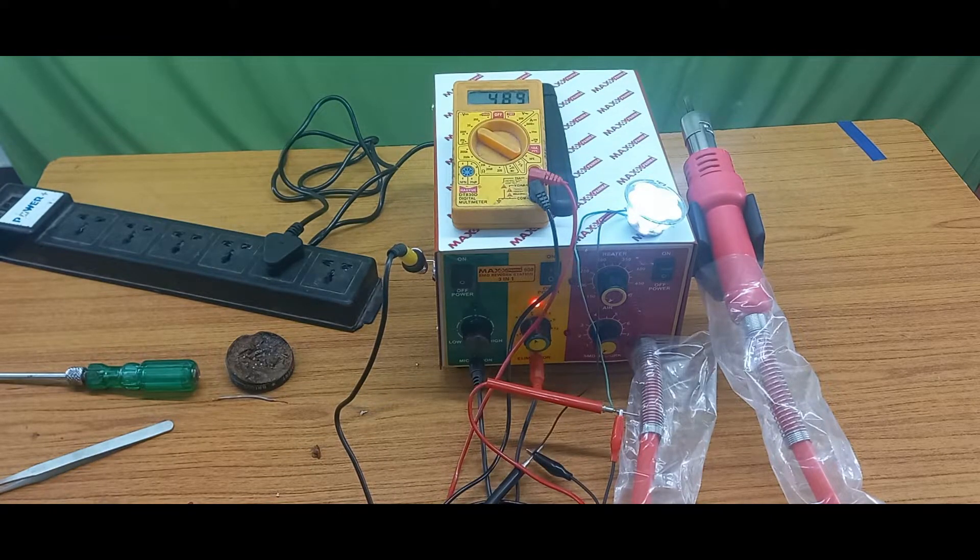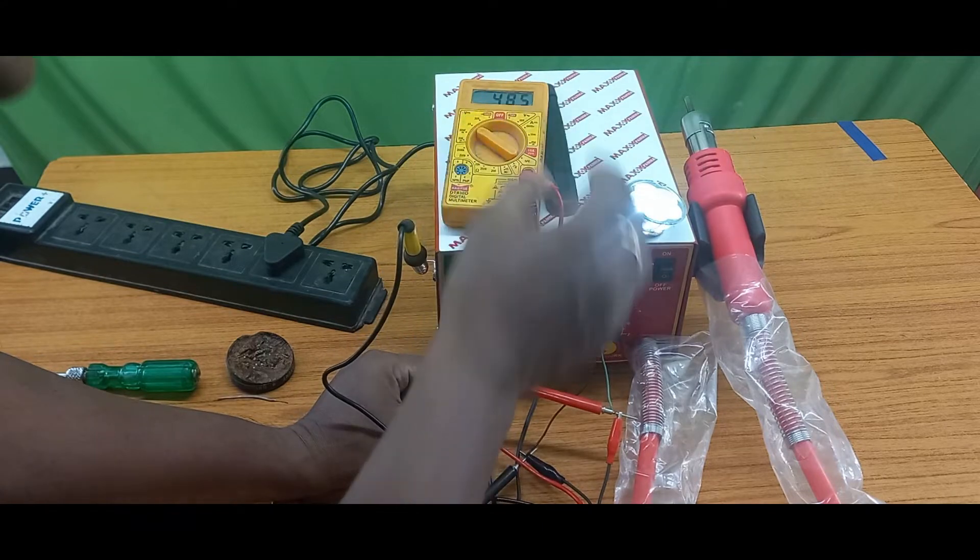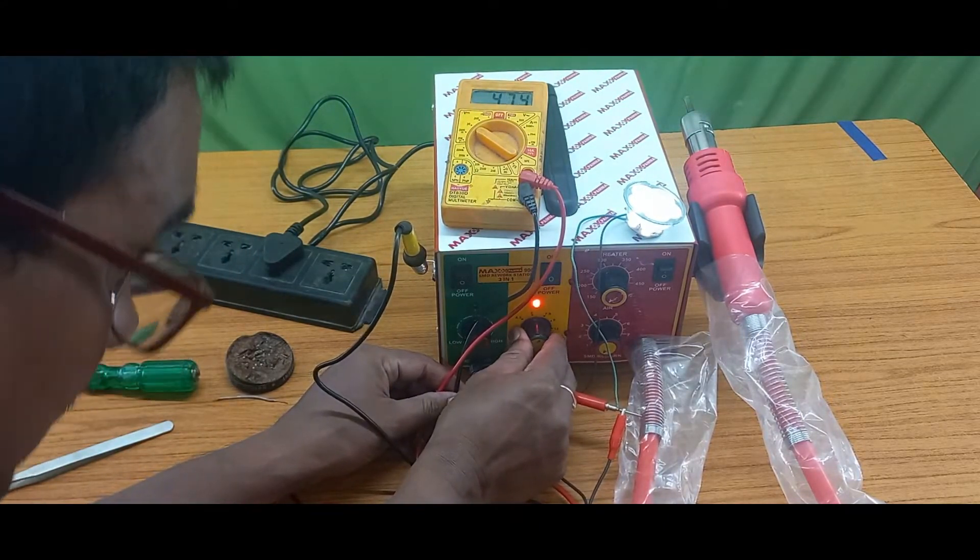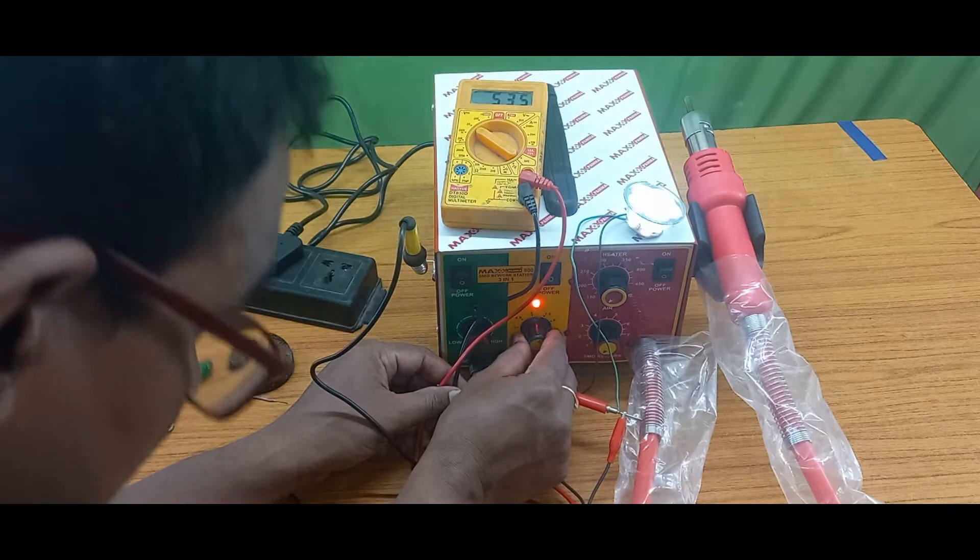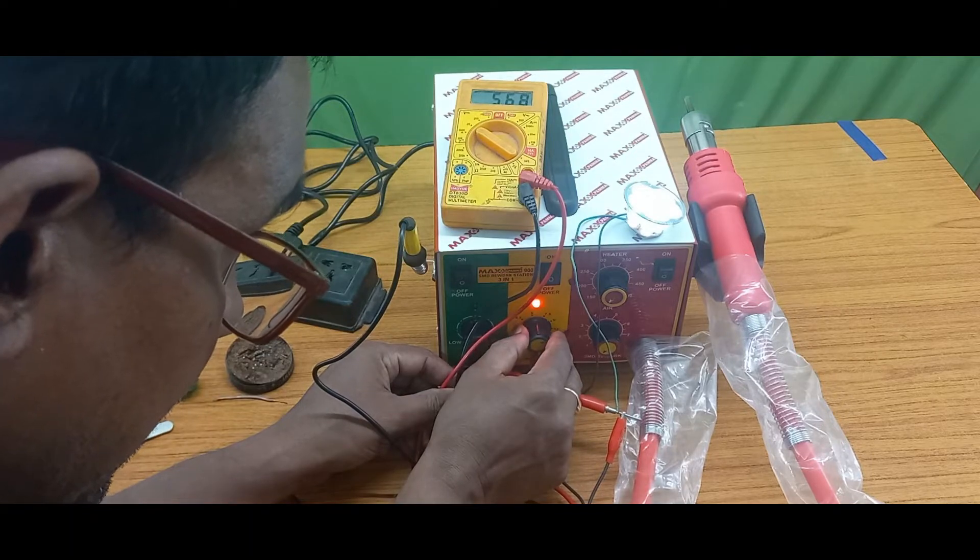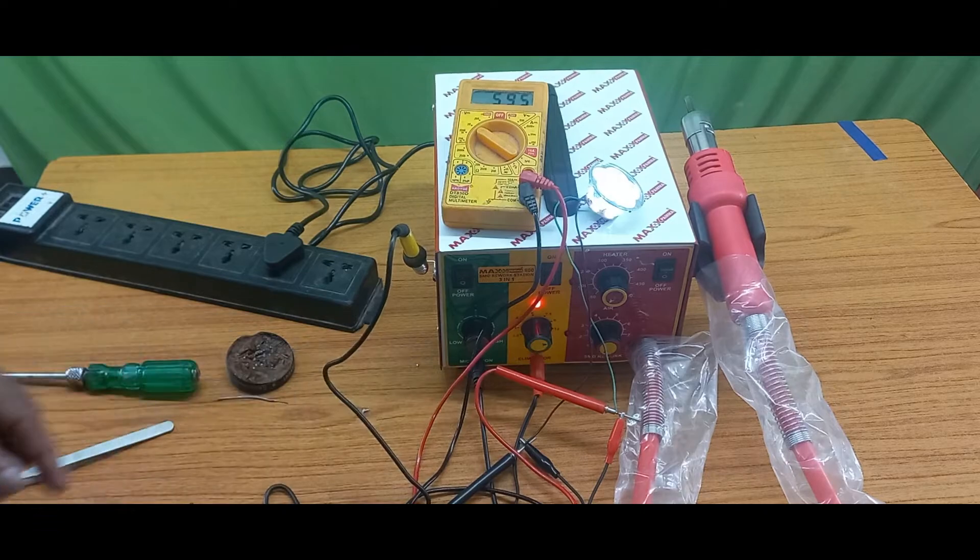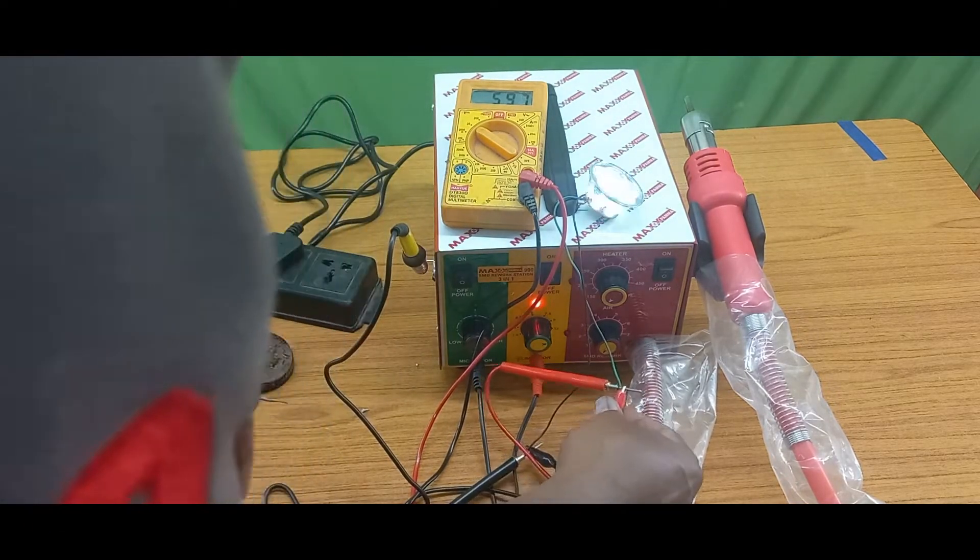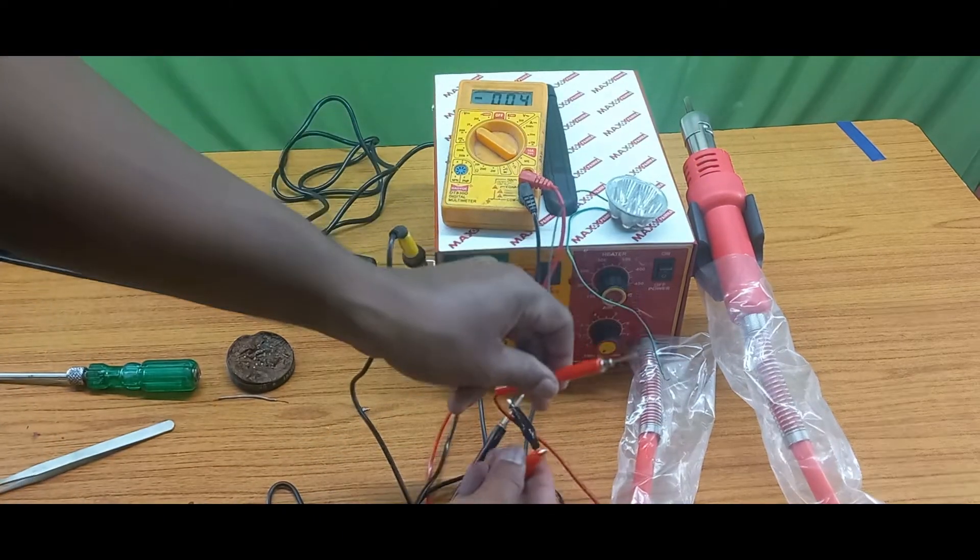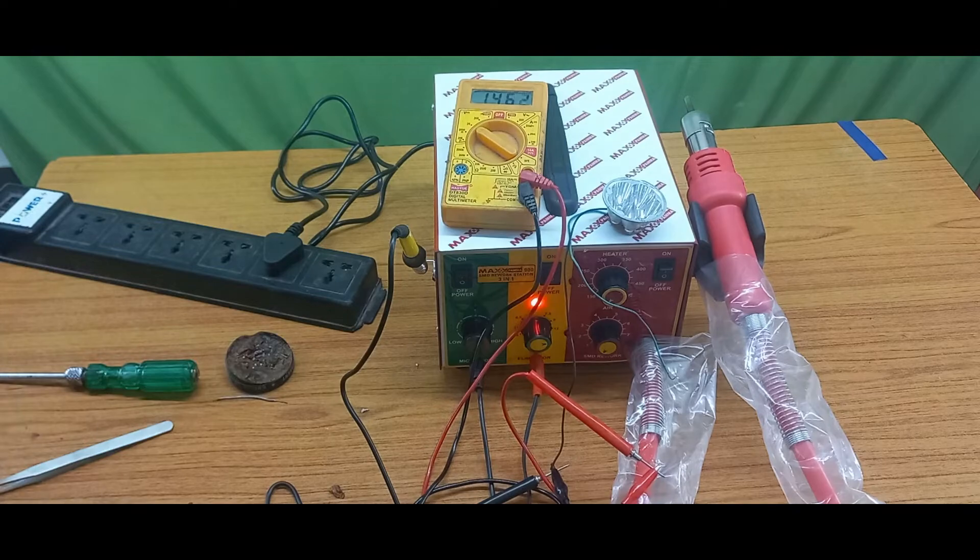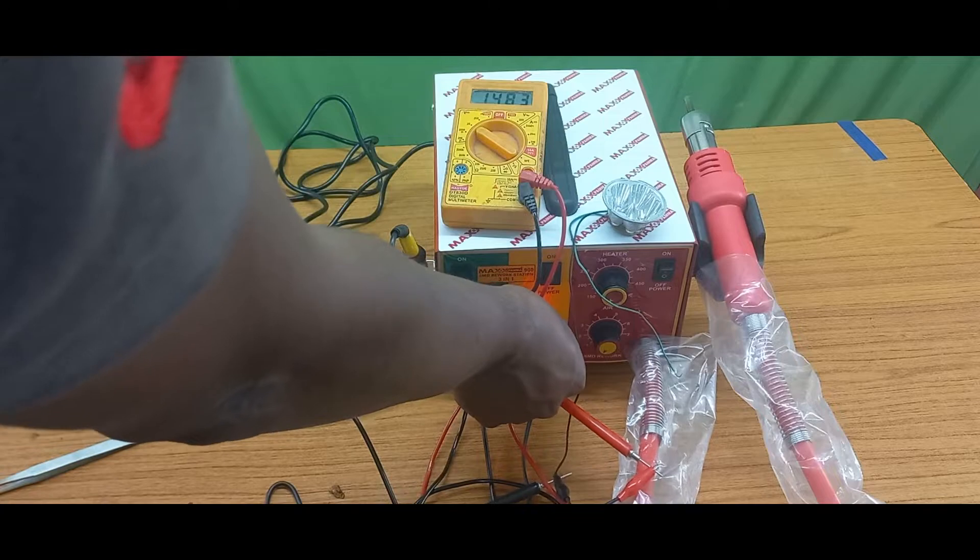7.5 volts, this one is 7.5 volts with load. 9 volts, 12 volts. Nearly this is 12 volts. With load it's coming. Without load is 14 volts. Now I will decrease this voltage also.